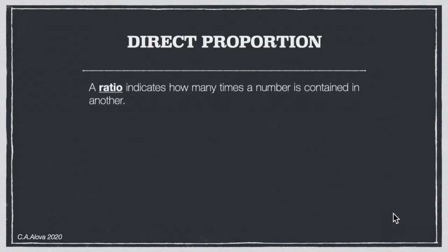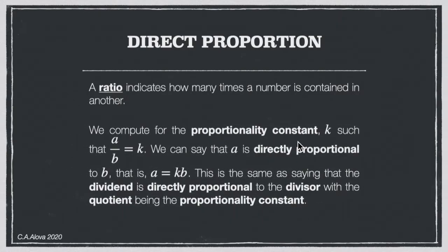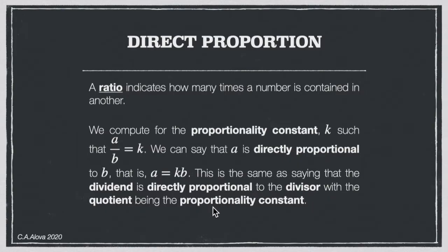A ratio indicates how many times a number is contained in another. We compute the proportionality constant K such that K equals A over B. We say A is directly proportional to B, meaning A equals K times B. As A gets higher, B also gets higher, and as A gets lower, B also gets lower.